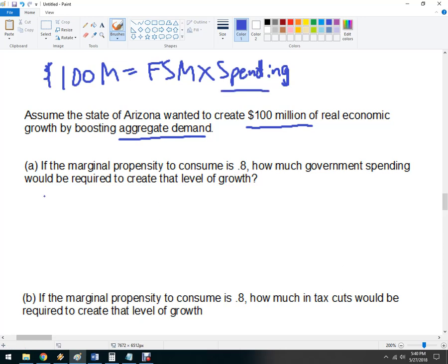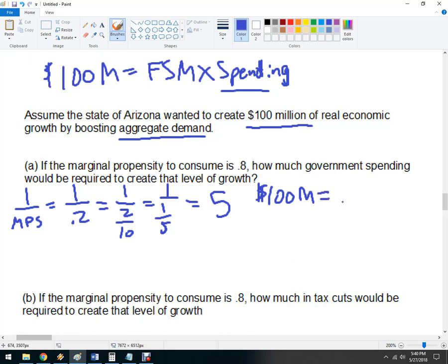So, marginal propensity to consume, remember, it's 1 over the MPS. So, it's 1 over .2. And that's 1 over 2 over 10. That turns into 1 fifth. 1 over 1 fifth is going to turn into 5. So, it's 100 million. Plug this back into what I was doing up there. 100 million, fiscal spending multiplier of 5, times, I'm going to call this G for government spending.